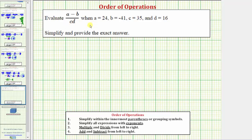We want to evaluate the given expression when a equals 24, b equals negative 41, c equals 35, and d equals 16.